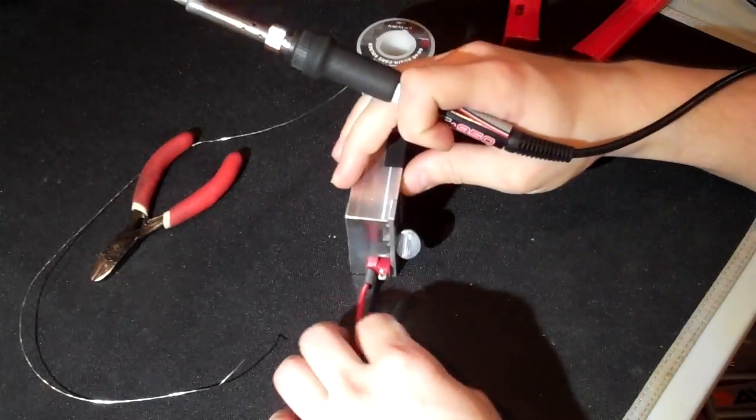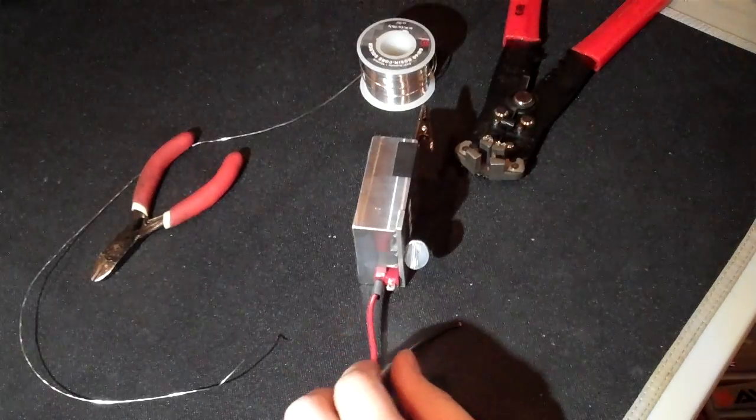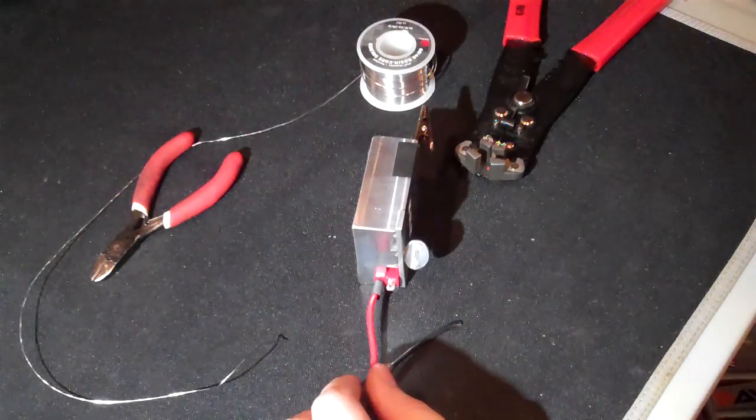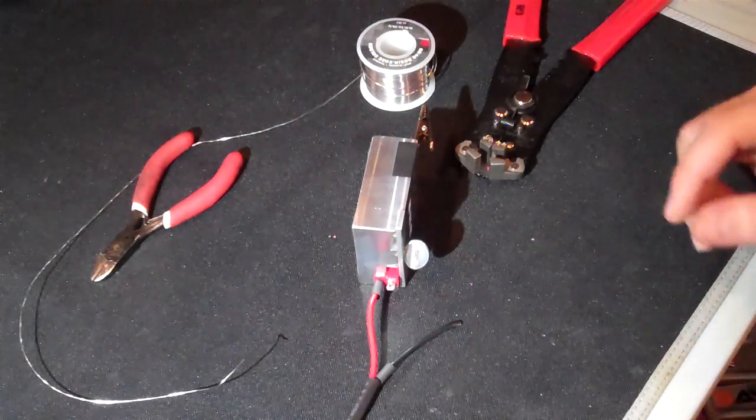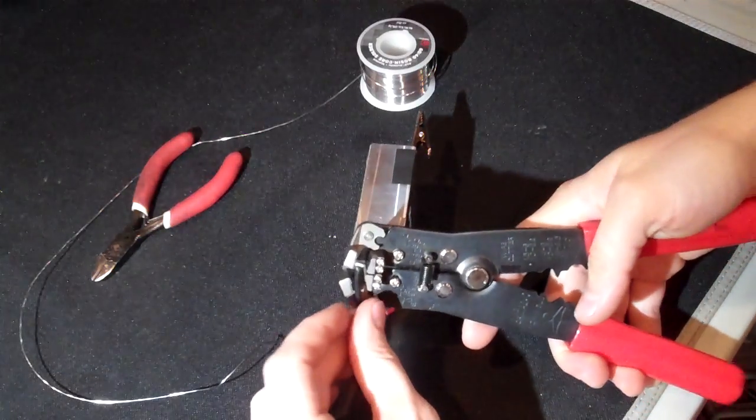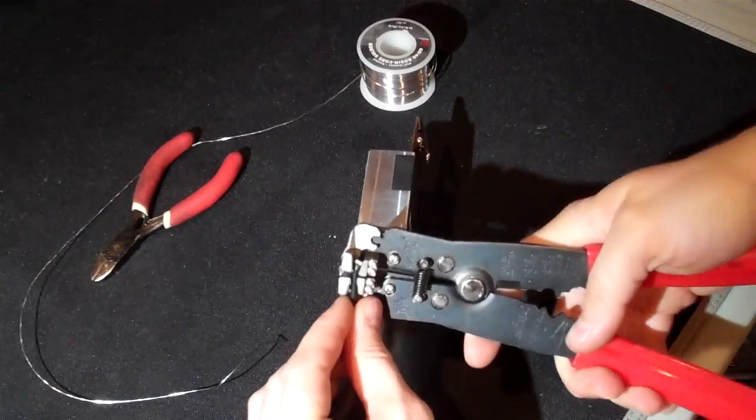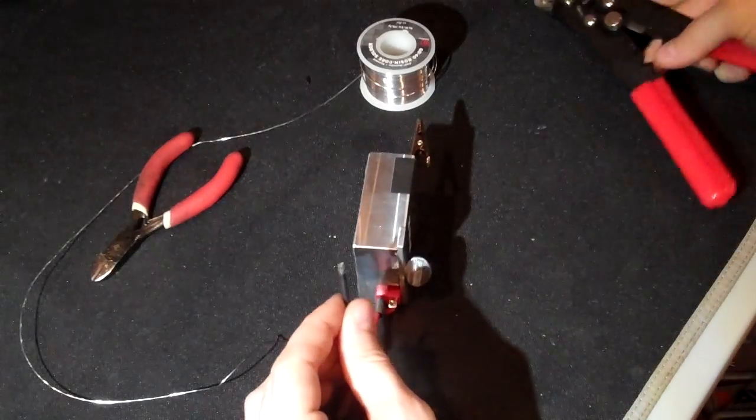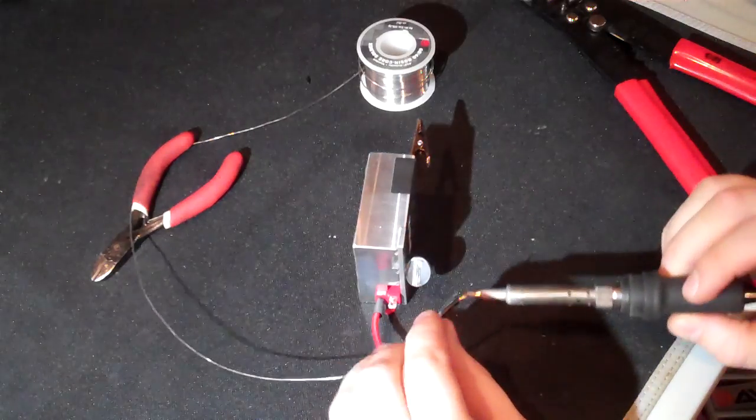All right, you could wait a couple seconds, let it cool off a little bit. Slide the heat shrink over, we can let that go. And next we'll do the negative. Grab my strippers again, strip a little piece, just grab it a little bit like that. Get some solder through this.